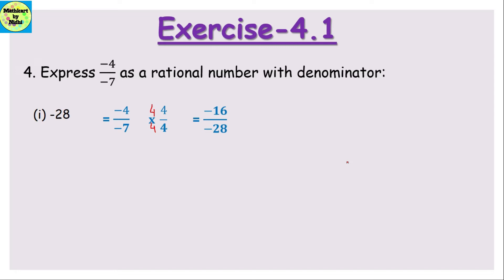Next, make a new rational number with denominator 35. We need to multiply -7 by -5 to get positive 35 (since -7 is negative, multiplying by -5 gives a positive result). So we multiply the numerator -4 by -5 as well: (-4) × (-5) = 20 and (-7) × (-5) = 35, giving the answer 20/35. For denominator 7: we multiply -7 by -1 to remove the minus sign, so the answer is 4/7.